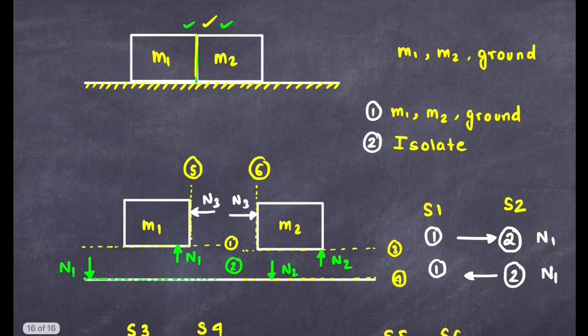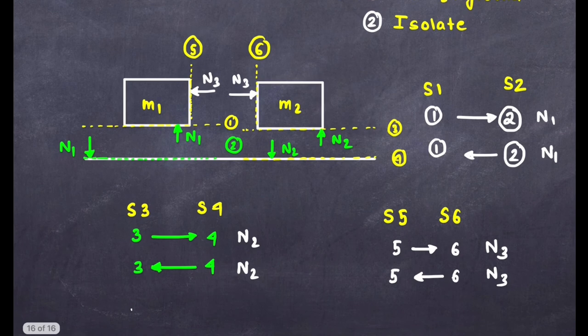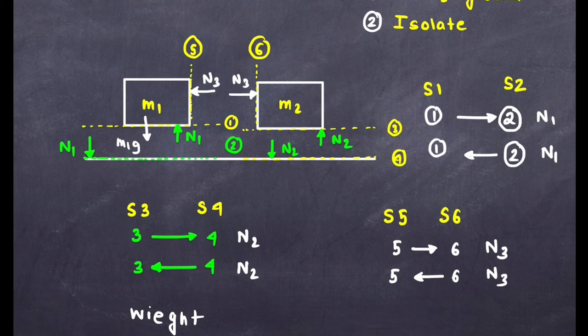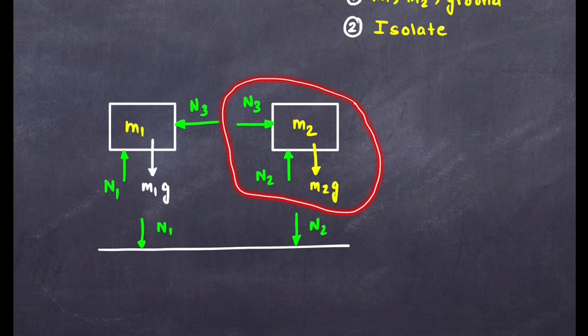Step 4 — non-contact forces: weight m1g acts downward on m1, and weight m2g acts downward on m2. The free body diagram of m1 shows N1 upward, N3 horizontal, and m1g downward. The free body diagram of m2 shows N2 upward, N3 horizontal (opposite direction), and m2g downward. The free body diagram of the ground shows N1 and N2 acting on it.